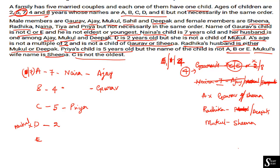Mukul cannot be a parent to D. Mukul also cannot be placed for A, B, or C — A is Naina's child, B is Gaurav's child, and C is Priya's child (Mukul's wife is Sheena, not Priya). So the only remaining position for Mukul is E. Mukul's wife Sheena is also substituted for E. The remaining age is 8 years, which goes to E. Then Radhika and Deepak must be substituted for D, with D being 2 years old.